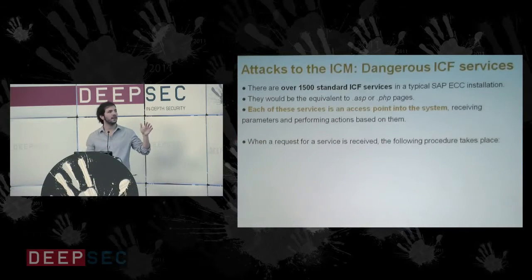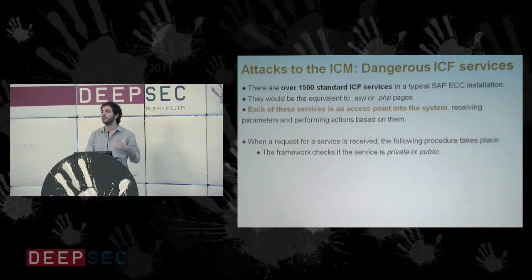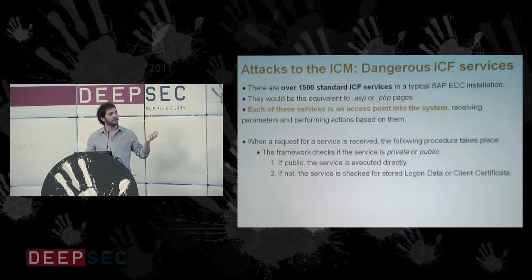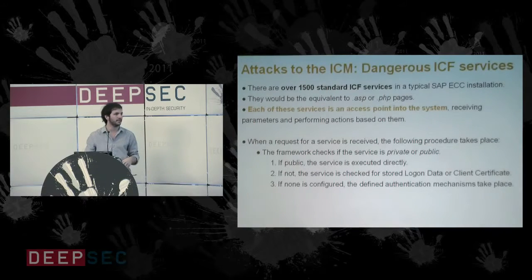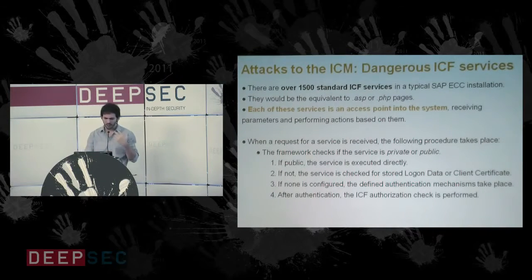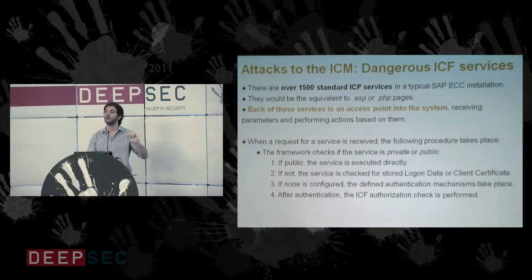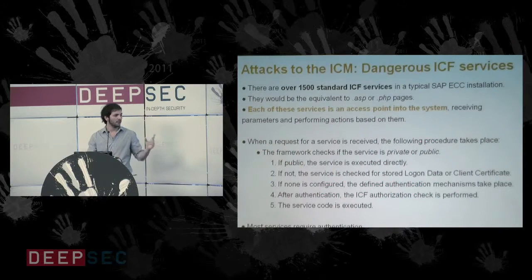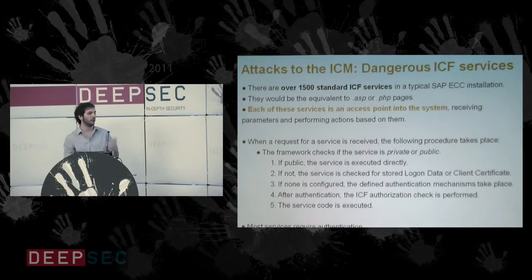When the ICM receives a request for one of these services, the following procedure takes place: first, the system checks if the service is public or private. If public, it gives you the content. If private, it triggers an authentication mechanism. If the user authenticates successfully, it checks whether the user has authorization to run that specific service, and if so, the service code is executed. Most services require authentication, but we'll see why that's not much of a barrier for an attacker.